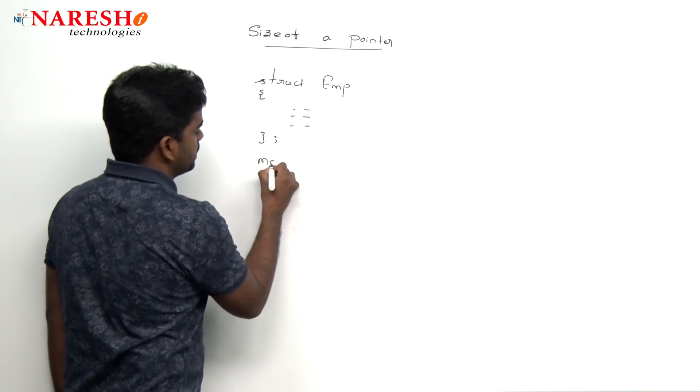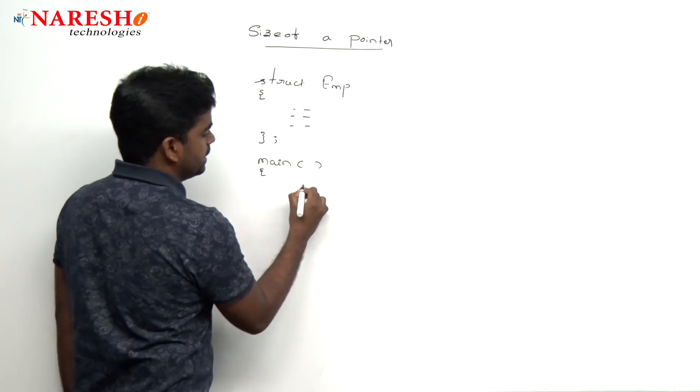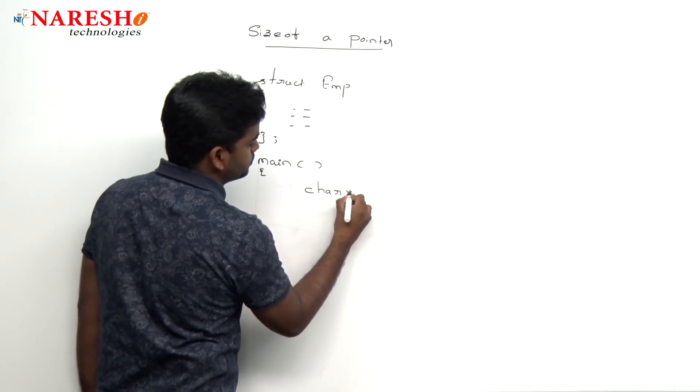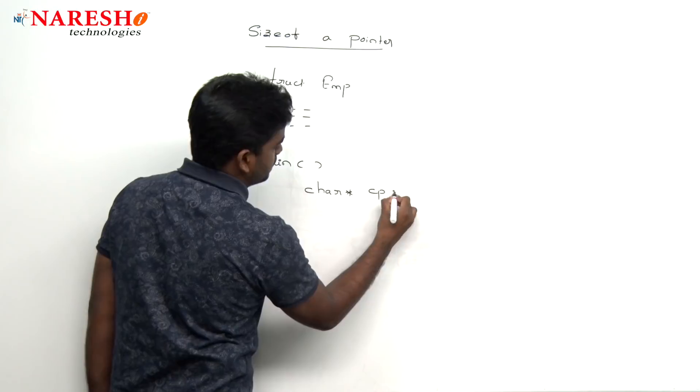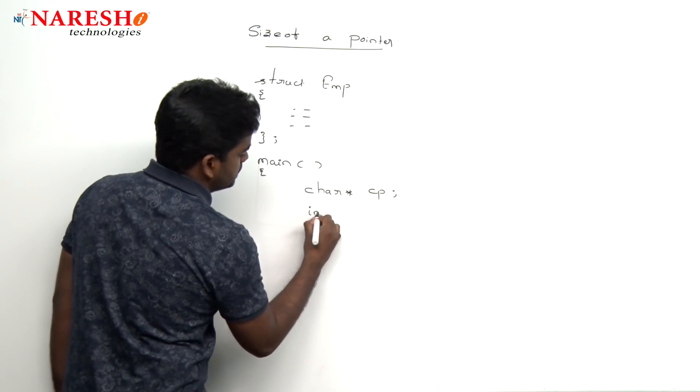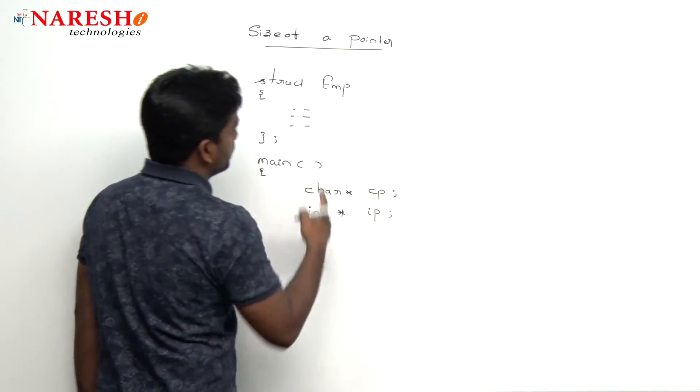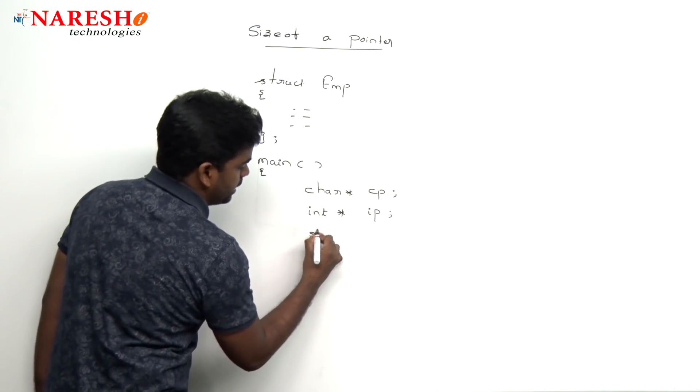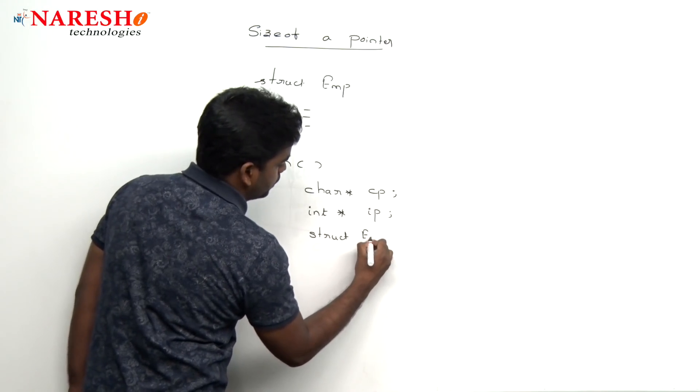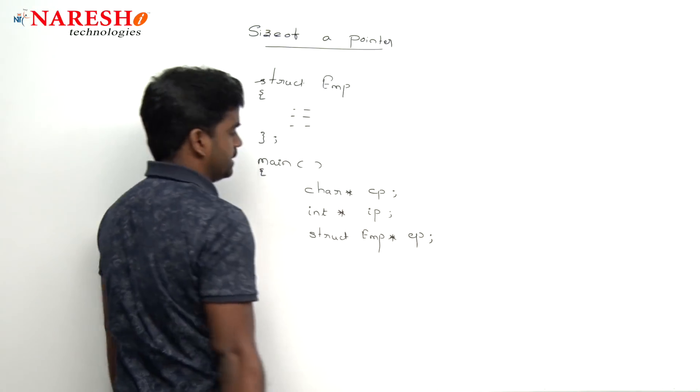Now, inside the main function, we are declaring variables like a character pointer variable just like cp I have given. Next one is an integer pointer variable just like ip and we are taking that structure pointer variable also, struct employee pointer and here is the variable we are taking like this.